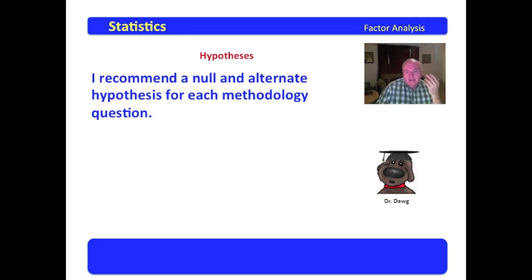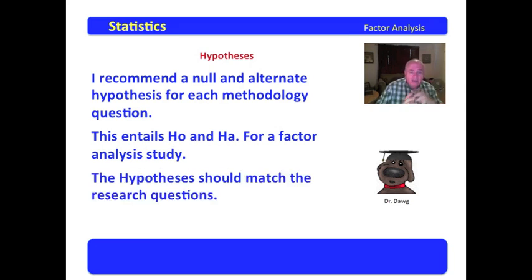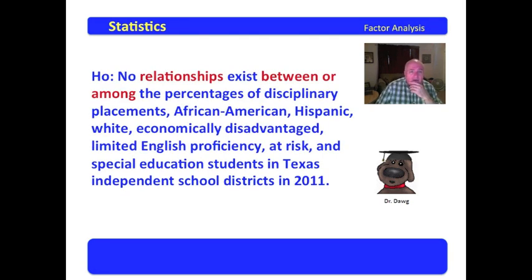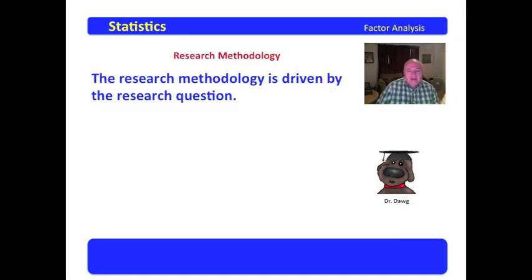On hypotheses, I recommend that when you deliver your hypothesis to match that question, you provide both the null and the alternate hypothesis for each methodology question. This entails H0 and HA for factor analysis — H0 is the null, HA is the affirmative — and the hypothesis should match the research question. Here's the null hypothesis: No relationships exist between or among the percentages. And here's the alternate: Relationships exist between or among. No relationships versus relationships — fairly easy to frame that.